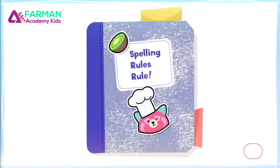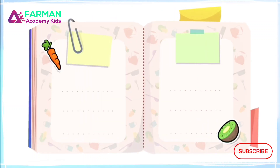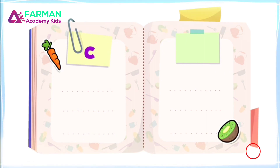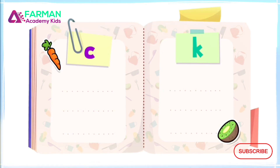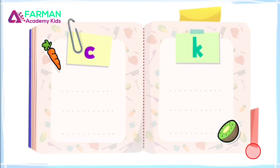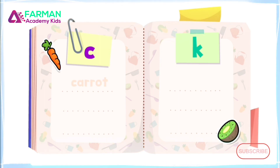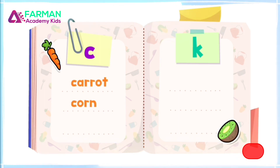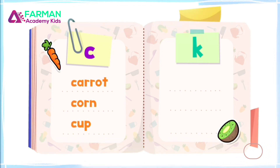Here's a spelling rule I learned in the kitchen. The letter C and the letter K can both make the K sound. How do you know which one to use? Let's look at some words — I bet you already know these. Carrot, corn, and cup all use the letter C to make the K sound.